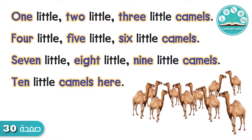1 little, 2 little, 3 little camels. 4 little, [5 omitted], 6 little camels. 7 little, 8 little, 9 little camels. 10 little camels here. Now leave out the number 8.